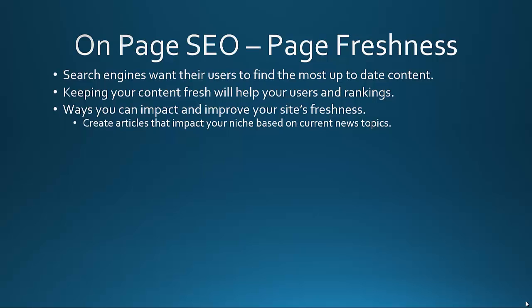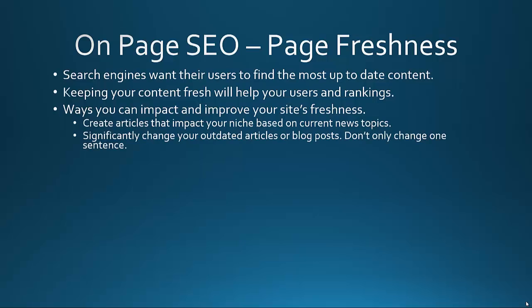Create articles that impact your niche based on current news topics or happenings. Significantly change your outdated articles or blog posts — don't only change one sentence. If you have an article dating back to 2012, like 'top weight loss tips of 2012,' update it to 'top weight loss tips of 2014' and go in to find new improved weight loss methods. Similarly, 'top WordPress plugins of 2012' could become 'top WordPress plugins of 2014,' swapping out the obsolete ones. These are ways you can pick up and improve upon your content.